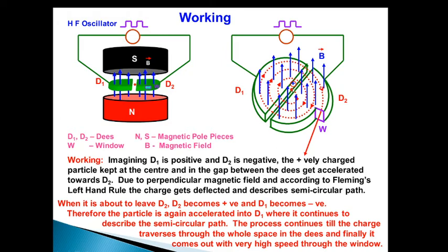So D2 becomes positive and D1 becomes negative. The positive particle again accelerates because it is a positive charge. If D2 has positive charge, then this positive charge will experience a force due to electric field, so it is attracted towards the negative plate. This process continues till the charge traverses through the whole space in the D's, and finally it comes out with very high speed through the window.